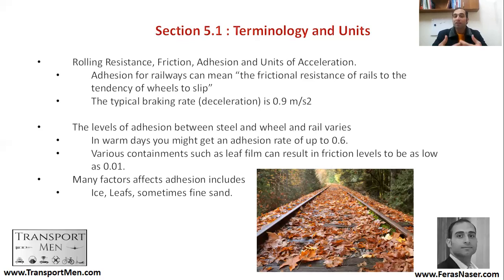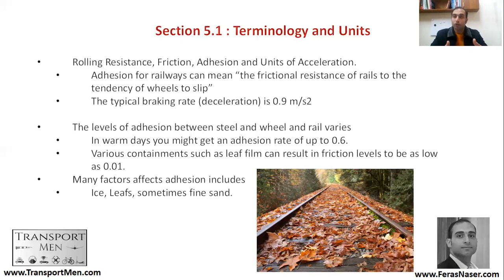The typical braking deceleration is 0.9 meters per second squared, and the level of adhesion between steel wheel and rail varies. On warm days it will be around 0.6, but if you have leaves or a leaf film and low adhesion, it might reach as low as 0.01, which can result in wheel slips and sometimes wheel spins, depending on the location.